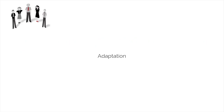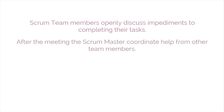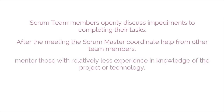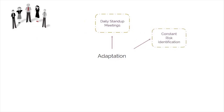Some examples of adaptation include the following. In daily stand-up meetings, Scrum team members openly discuss impediments to completing their tasks. After the meeting, the Scrum master coordinates help from other team members. More experienced members also mentor those with relatively less experience and knowledge of the project or technology. When the needed resource doesn't reside within the team, the Scrum master will acquire it externally. Risk identification is performed and iterated throughout the project.